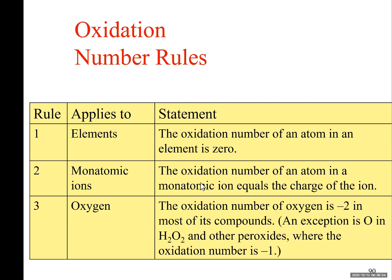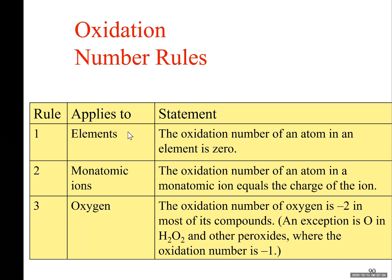Rule number one states that an element — an atom — always has an oxidation number of zero. For example, copper metal is made out of atoms. It hasn't lost or gained electrons, meaning the total number of electrons and protons are equal, so the charge is zero. Any substance made out of the same atoms has a charge of zero.